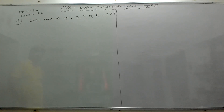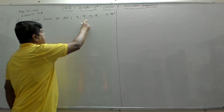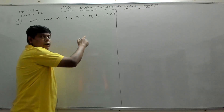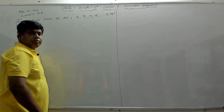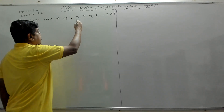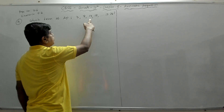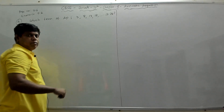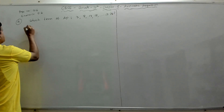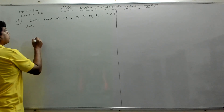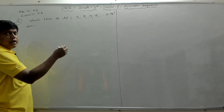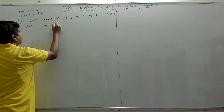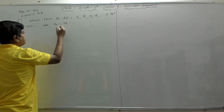Problem number 4 asks: which term of this AP is 78? We have to find which term of this given AP is 78. If we keep on writing the first term, second term, third term, fourth term, and so on, 78 will be which term? So the solution is: we will assume 78 as the nth term. Let an equal to 78.